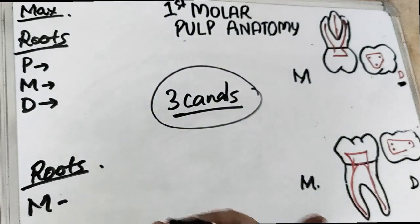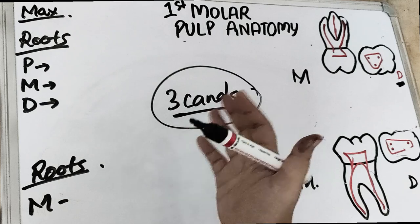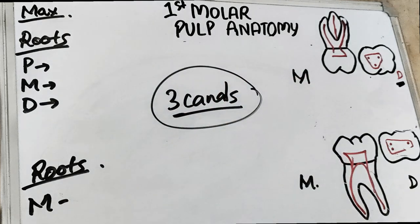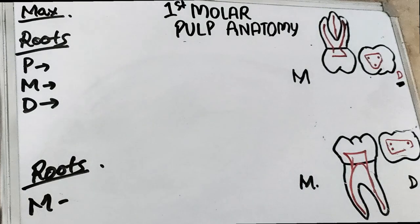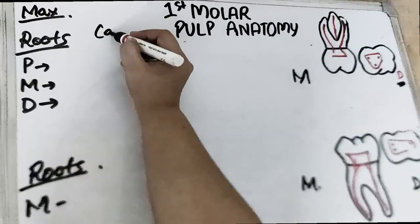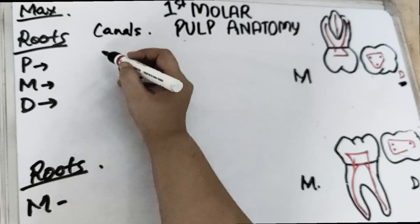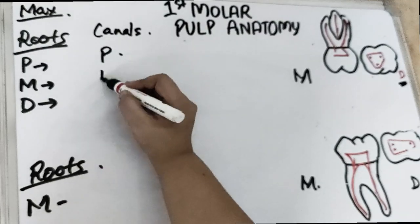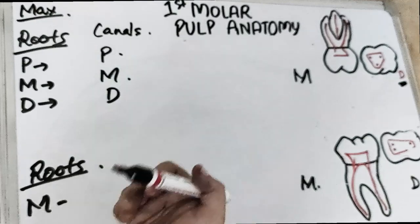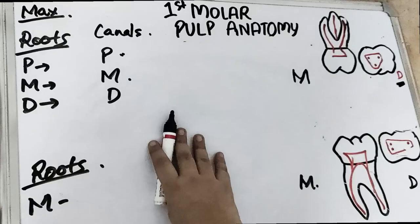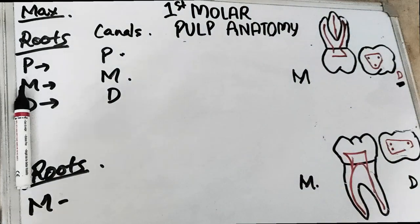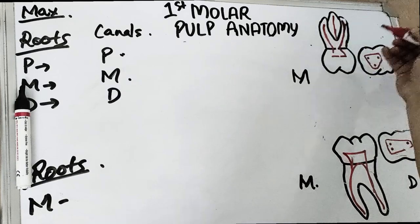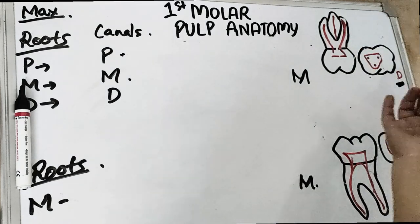Both the maxillary and mandibular first molars have three canals, whether it is first or second molar. So for maxillary first molar we have three canals: one in the palatal, one in the mesial, one in the distal. The palatal canal is present in the palatal root, the mesial canal in the mesial root, and the distal canal in the distal root.